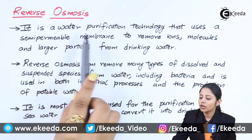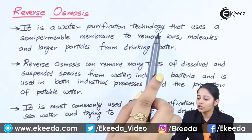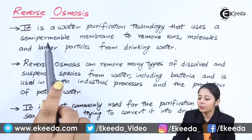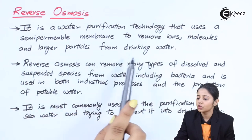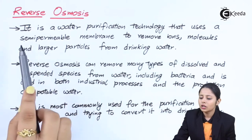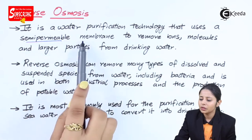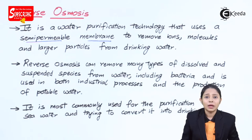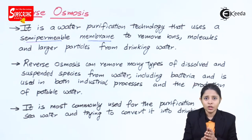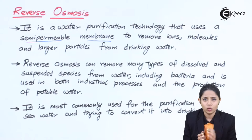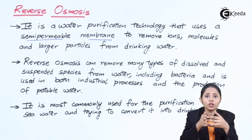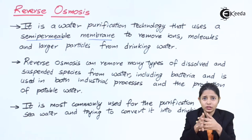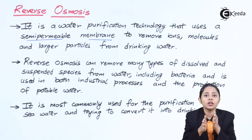Reverse osmosis is a water purification technology that uses a semi-permeable membrane to remove ions, molecules, and larger particles from drinking water. A membrane is nothing but a small thin sheet or film which has extremely small pores in it. These pores are so small that only water molecules can actually penetrate through it and not the impurities.